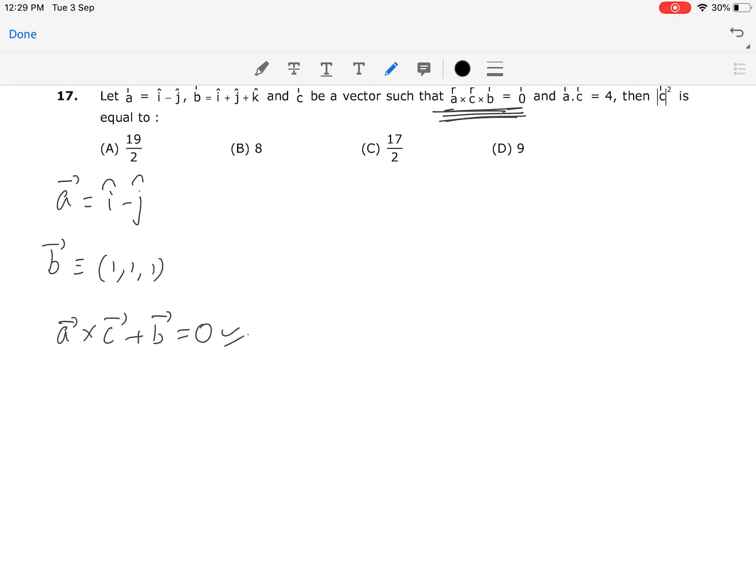This relation is actually this one here, and it is also given that a vector dot c vector equals 4. We need to find out the value of modulus of c vector squared.